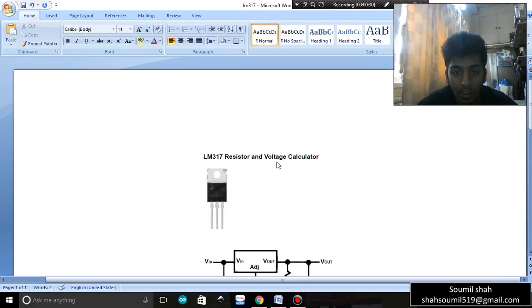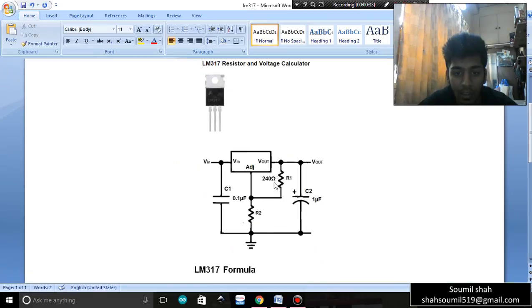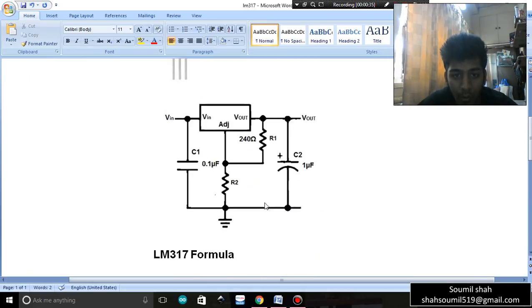Here you can see the diagram of LM317. Let me zoom in so that you can see it correctly. As you can see, the IC has three terminals: V in, adjust, and V out. And we have two resistors, that is R1 and R2. Usually R1 is 240 ohms and a capacitor to smooth the output voltage. Basically we don't need ripples, right?